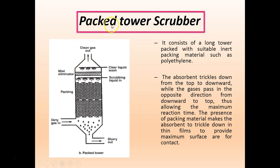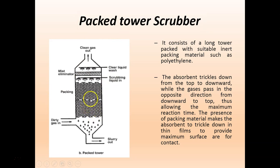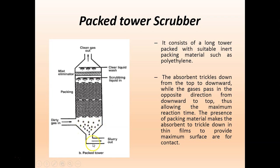First is the packed tower scrubber. It consists of a long tower packed with suitable inert packing material such as polyethylene. Gaseous pollutants enter through an inlet and pass through this packing material. The contaminants come in contact with a jet of liquid sprayed in the opposite direction. The contaminants in the gas react with the water, and at the bottom, sludge is formed. When it gets sufficiently filled, the slurry is taken outside through an outlet.